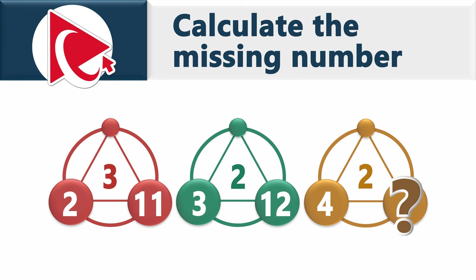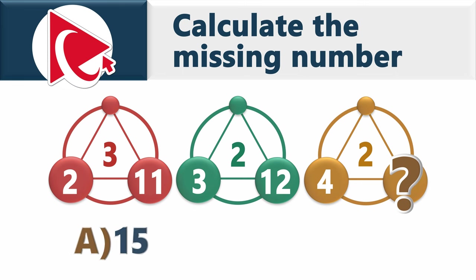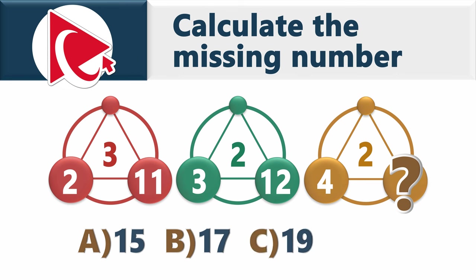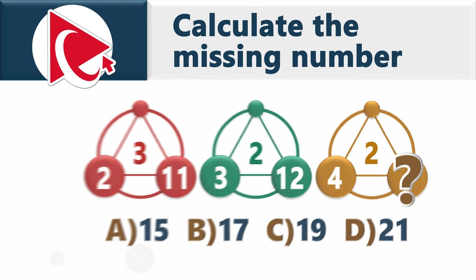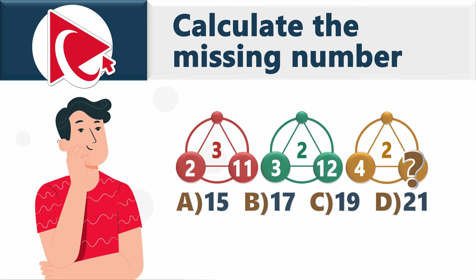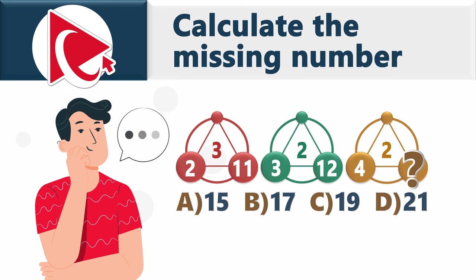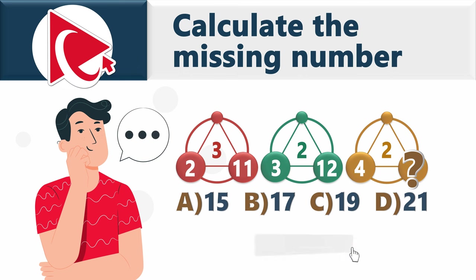Once you calculate it, select from choices: A is 15, B is 17, C is 19, and D is 21. Solve it solo, and when you're done, join me in the comments for a virtual high-five where I'll share the answer. Let's conquer this cognitive mountain together!